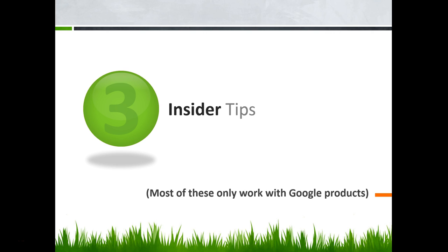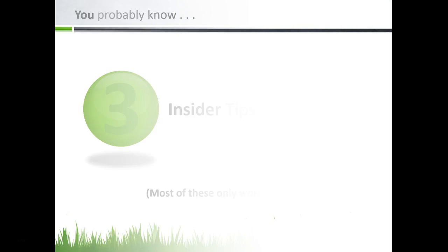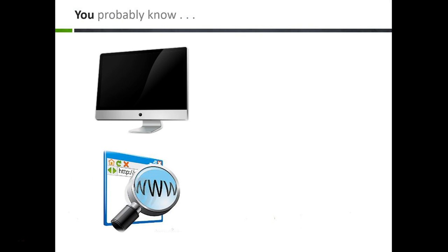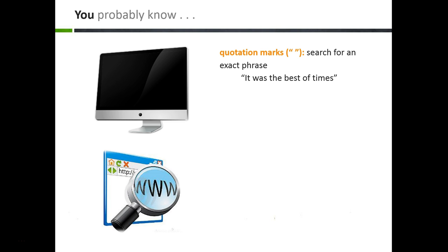Now, let's look at some lesser-known Google insider tips. You're probably aware that placing quotation marks around a phrase searches for an exact phrase. This is helpful when you are searching for a common multiple-word phrase or for a popular quote.